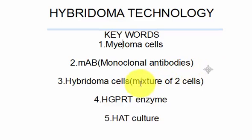The next word is hybridoma cells. Hybridoma cells are hybrid cells — a mixture of two dissimilar cells. The next one is the HGPRT enzyme, which stands for hypoxanthine guanine phosphoribosyl transferase. The next one is HAT culture medium, which is used to make the hybridoma cells sensitive.